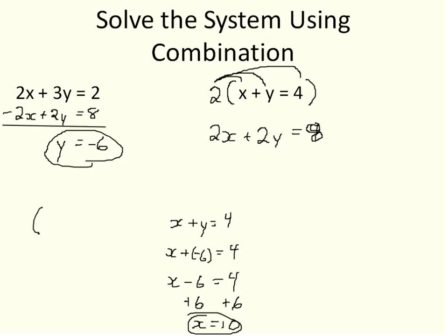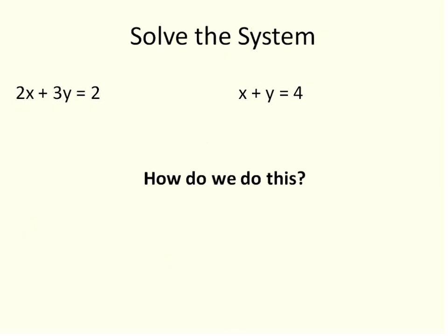That's the solution for this system, 10, negative 6. And we solved it using combinations. Now, we could have also solved using substitution, if we had just substituted or transformed this equation to solve for a variable and then substituted, that would have worked too. But we can use linear combination, even if they don't match up.